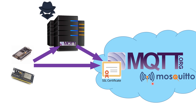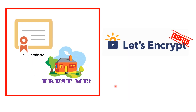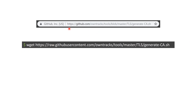SSL certificates come in two types. The first is a self-signed certificate, where you tell the internet to trust you because you're signing it yourself. You can use a script created by the PhoneTrack project — an app for tracking yourself on a map, also integrated in Home Assistant — which downloads and creates these certificates so you can sign them yourself.